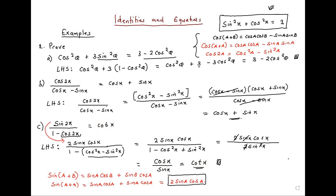A student asks: where is the one going in the denominator? The instructor clarifies that the whole expression 1 minus cos 2x equals 2 sine squared x. The student replies: oh sorry, it's fine — I didn't see that the negative was multiplying the whole cos squared x term.